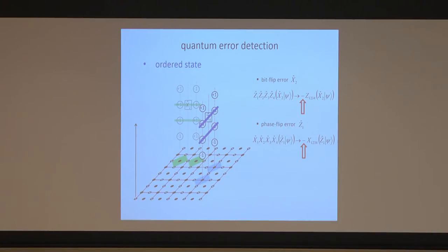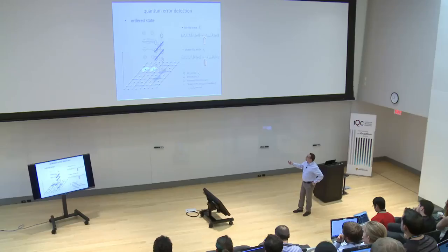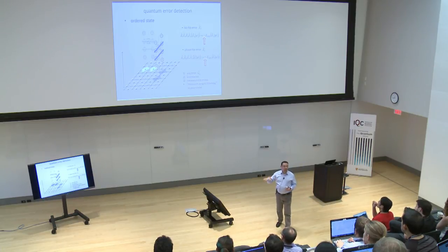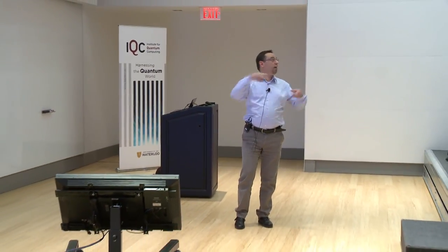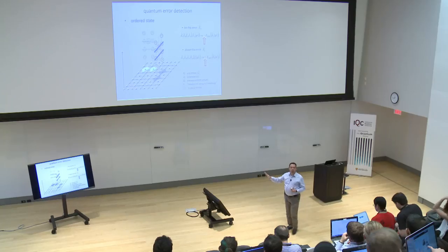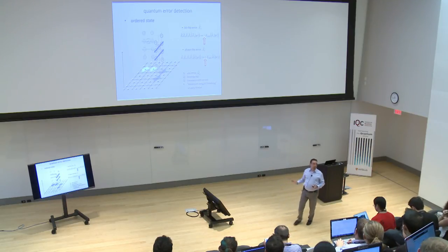Quantum error correction is really quantum error detection at the quantum level. The task is to detect errors and store them on a classical computer. A classical algorithm called the minimum weight matching algorithm — a type of graph theory — then efficiently tracks all sign changes and corrects errors in software, without deteriorating the quantum speedup. We almost never need to perform actual correction on the quantum hardware; we just detect errors and keep track of them classically. I only understood quantum error correction once I learned this.